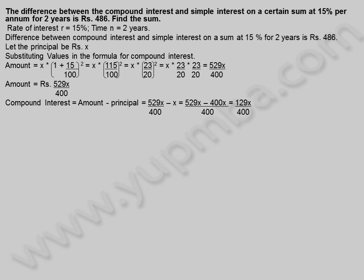Compound interest is equal to amount minus principle, which equals 529X by 400 minus X, equals (529X minus 400X) divided by 400, equals 129X by 400. So compound interest is equal to 129X divided by 400 rupees.